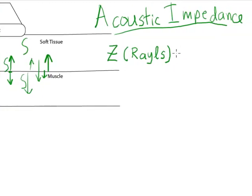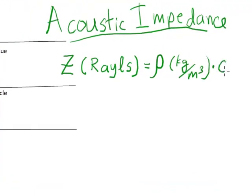And that's equal to the density in kilograms per cubic meter times the speed of propagation of sound in the media, which is meters per second. So let's take a look at an example.